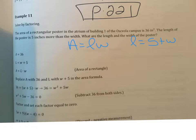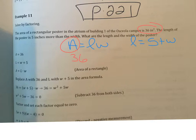We also know that the area is 36 square inches. So we can start with this formula and substitute 36 for area. We substitute five plus w for length, and then we'll have the w left to solve for. You could write it as w plus 5 — they mean the same thing — and then we still have this w.